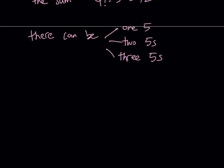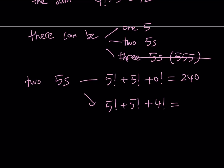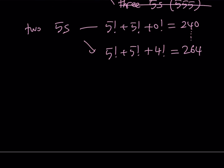We're going to look at each of these options. Three 5s is not going to work because that would give you 555, and 5 factorial times 3 is not going to equal 555, so that's not possible. So we either have one 5 or two 5s. What happens if we have two 5s? The possible options range from 5 factorial plus 5 factorial plus 0 factorial at minimum, to 5 factorial plus 5 factorial plus 4 factorial at maximum. That gives a range of 240 to 264. That's not going to work either.